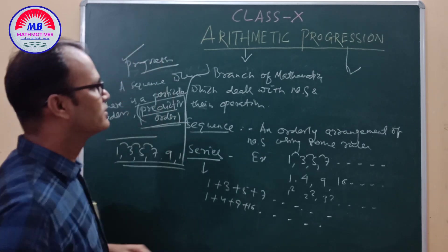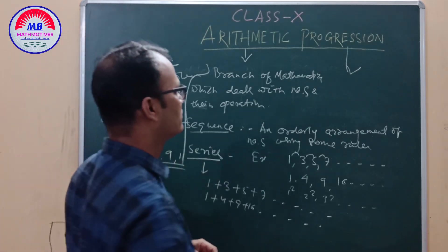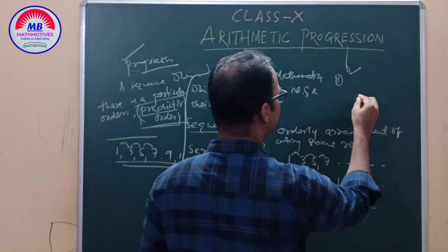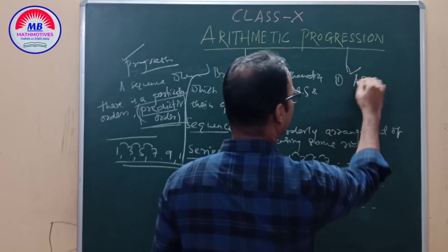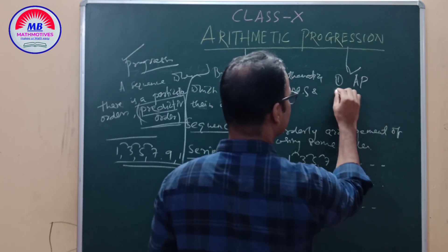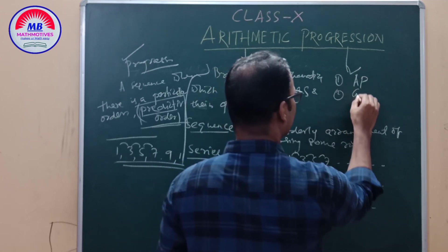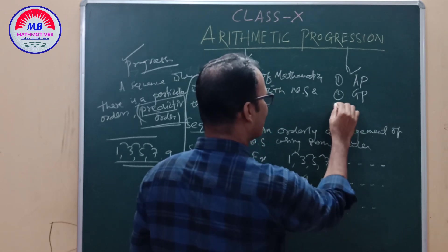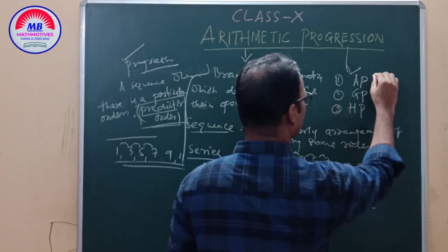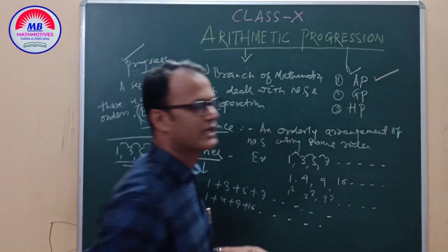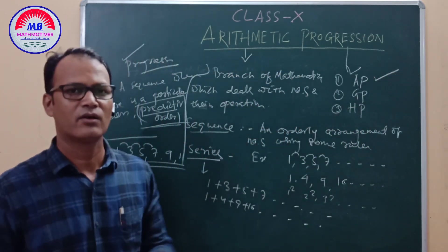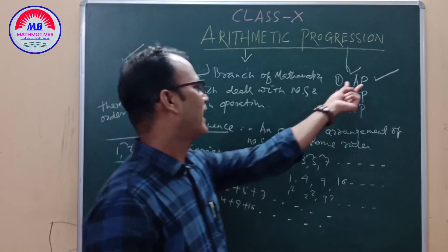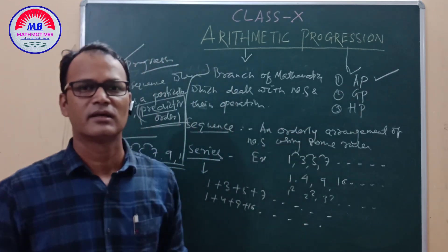Progressions are three types: one is Arithmetic Progression, two is Geometric Progression, and three is Harmonic Progression. But here in Class 10, we only study about Arithmetic Progression.